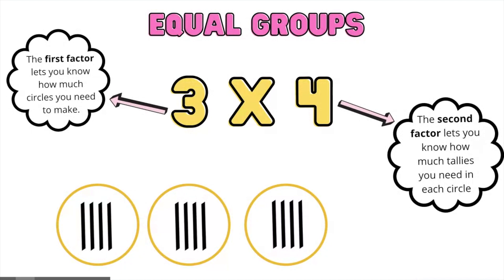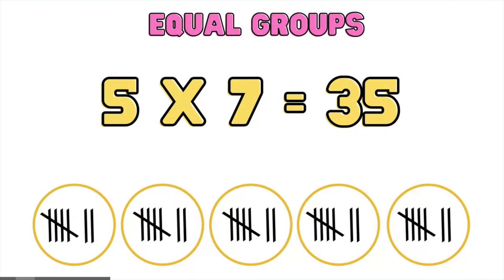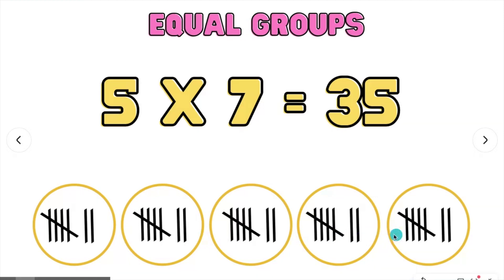Can you tell us the answer? Let's try another one: 5 times 7. We are going to make 5 circles — 1, 2, 3, 4, 5. We're going to put 7 tallies in each circle: 7, 7, 7, 7, 7. And our product, which is the answer, is going to be 35.